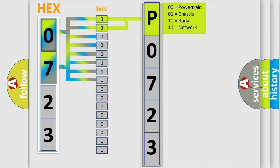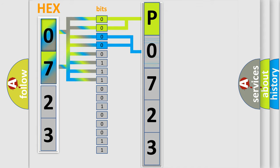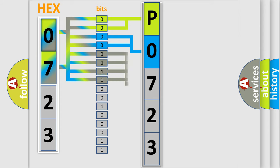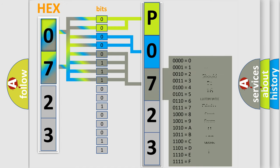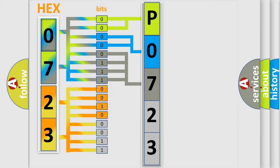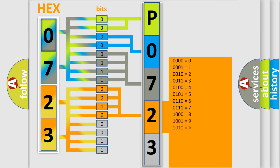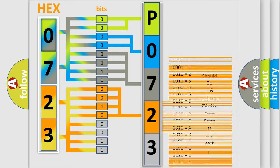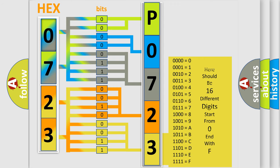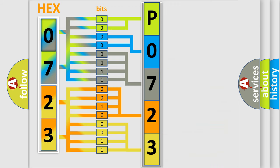By combining the first two bits, the basic character of the error code is expressed. The next two bits determine the second character. The last bits of the first byte define the third character of the code. The second byte is composed of eight bits: the first four bits determine the fourth character, and the last four bits define the fifth character. A single byte conceals 256 possible combinations. We now know in what way the diagnostic tool translates the received information into a more comprehensible format.